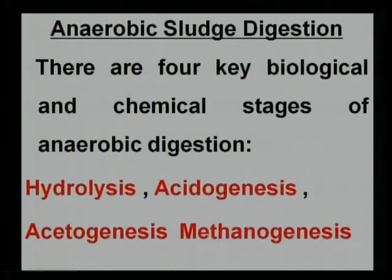There are four key biological and chemical stages of anaerobic digestion: hydrolysis, acidogenesis, acetogenesis, and methanogenesis. The first is hydrolysis — the breakdown of water (H₂O → 2H⁺ + oxygen released). This is significant because sludge contains a heavy amount of water, and water removal or thickening of sludge occurs through this step. Hydrolysis is one of the metabolic processes of anaerobic thermophilic bacteria.